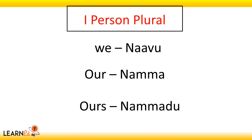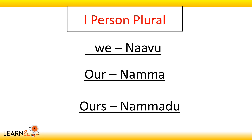Now let's see first person plural words. We: naavu. Our: namma. Ours: nammadu. In Kannada we say naavu, namma, nammadu. Just as singular words start with 'na', plural words also start with 'na': naavu, namma, nammadu.